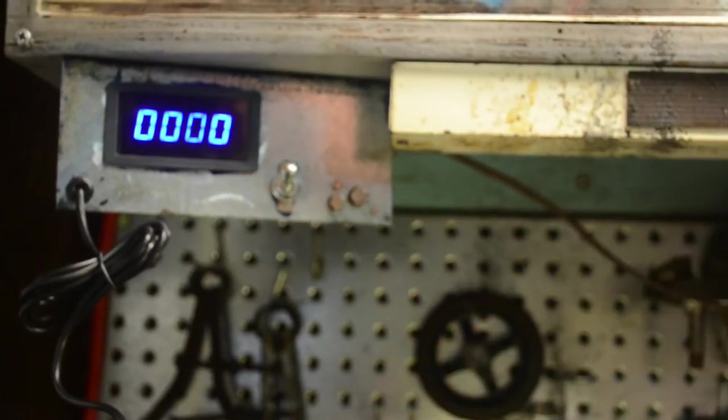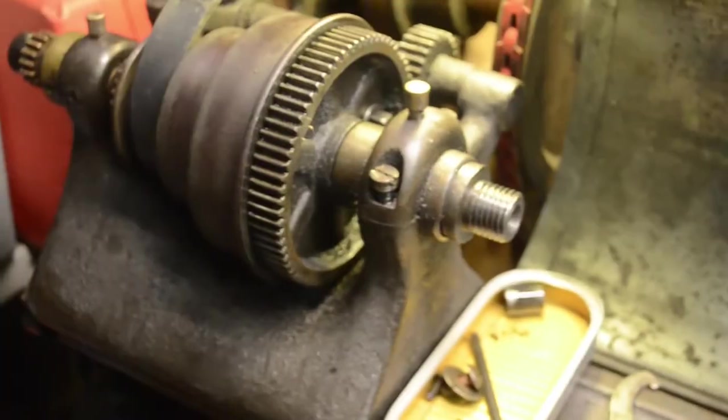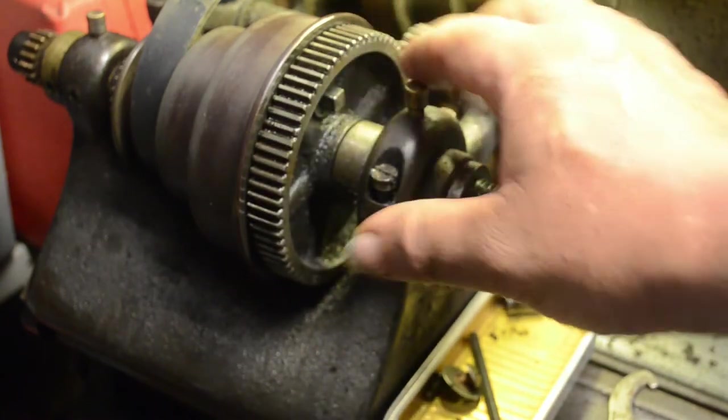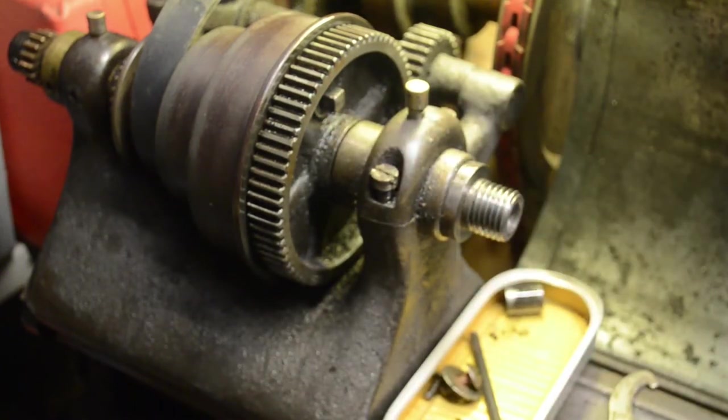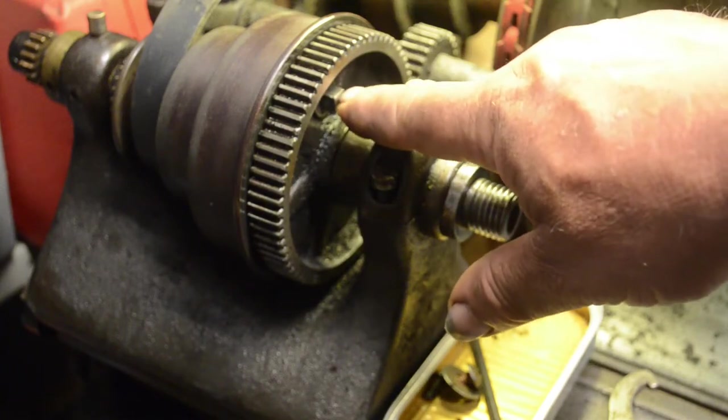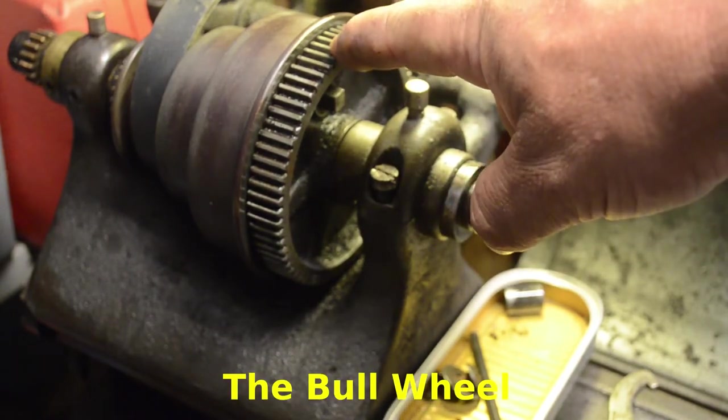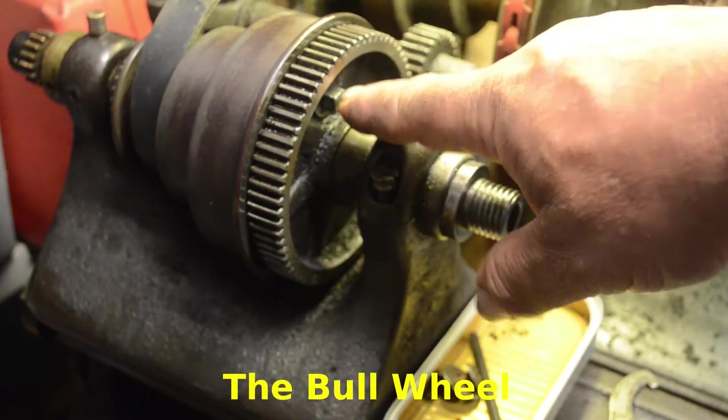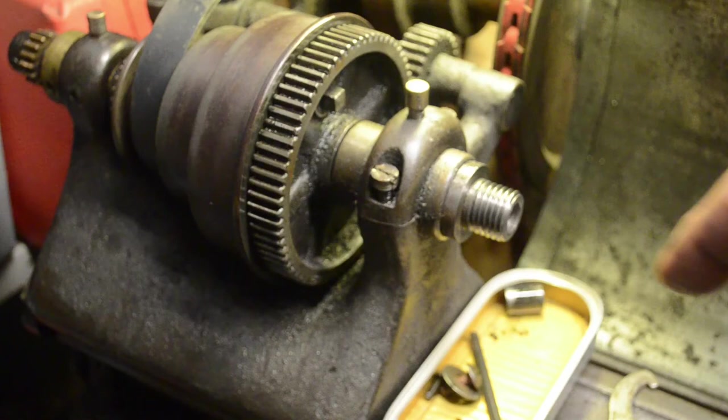In the process of trying to figure out where I want to put the Hall effect sensor, I decided I needed to figure out the back gears clutch system. Because whatever turns when the cone pulley is disengaged from the main gear will turn with or without the back gears setup, so it's an appropriate place to put the magnet for the Hall effect sensor.